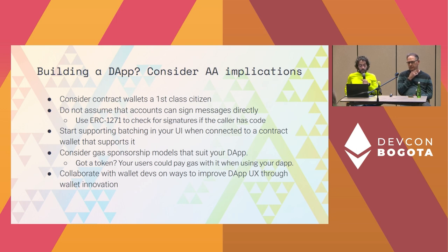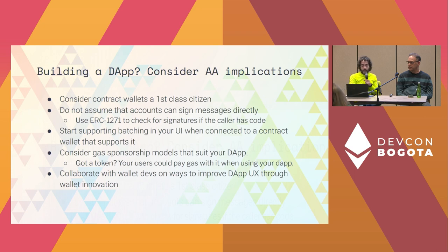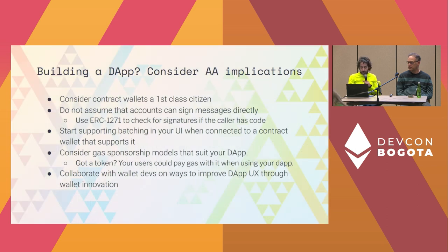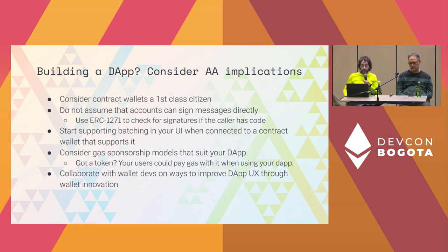There are easy ways to make your DApp compatible with both smart contracts right now and abstract accounts in the future. That's ERC-1271, which checks if the caller has code and invokes a function instead of assuming an ECDSA key. Another thing: if you can benefit from batching in your user interface — and many DApps, especially games, can — you should check if you're connected to a contract wallet that supports it. That will create a better experience for your users and save gas costs.